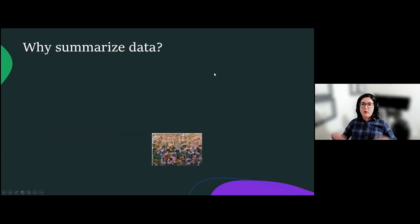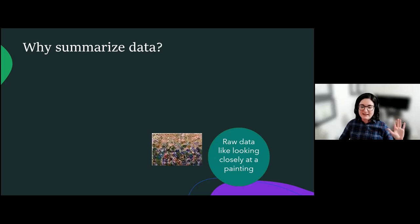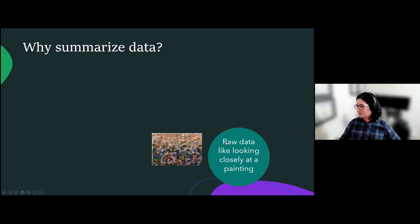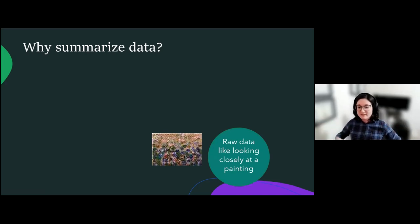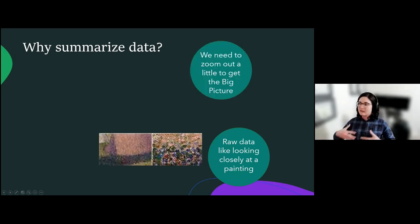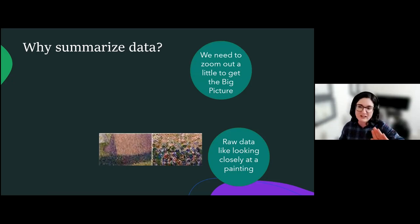First we're going to ask: why do we want to summarize data? Summarizing or looking at raw data is a little bit like looking really closely at a painting — you see lots and lots of details, but you've got no context for it. You have no idea what it's supposed to be. Looking at this little chip of a painting, can anyone take a guess as to what this painting might be? Maybe flowers. A football team. Buffalo. So we've got people or flowers. Sometimes we need to zoom out a little bit to get the big picture — we can't stand too close because we get a lot of details but no context.